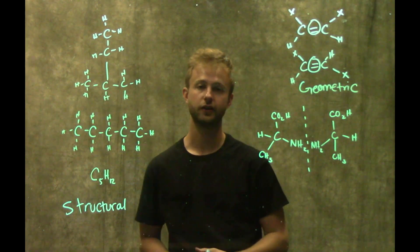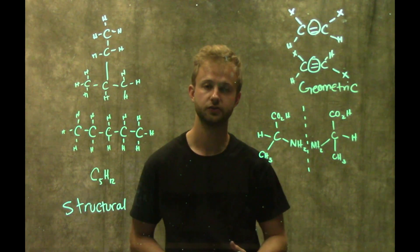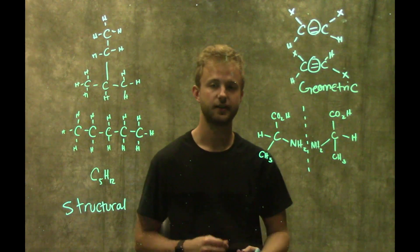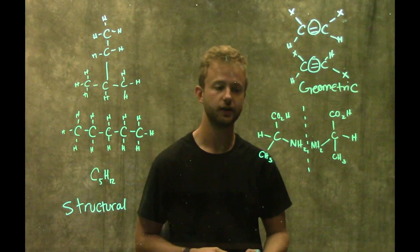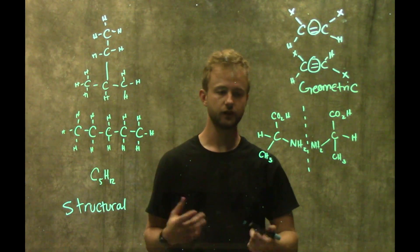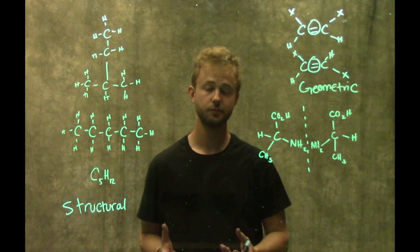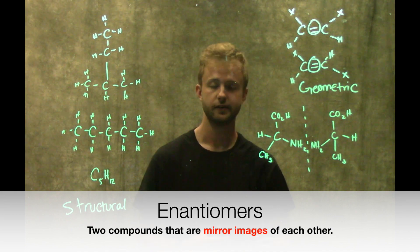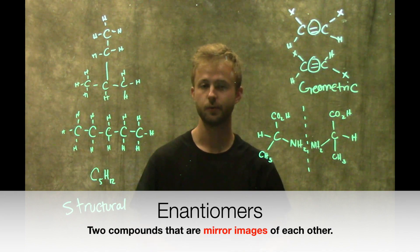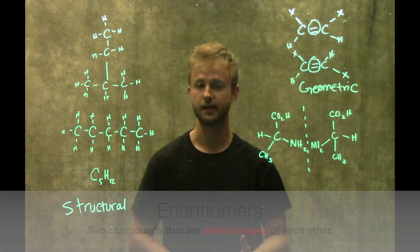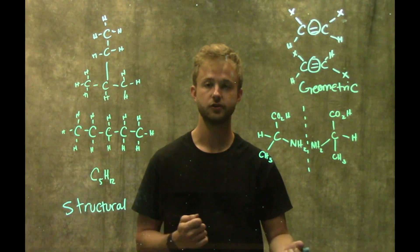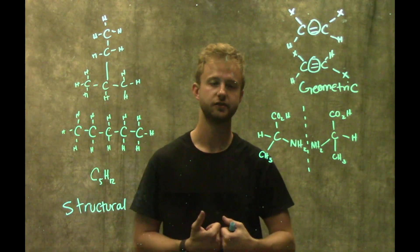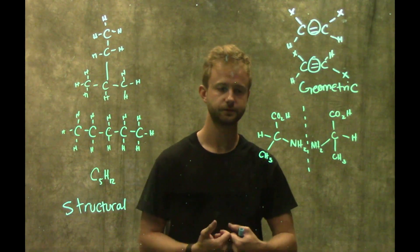Lastly, we're going to look at enantiomers. Enantiomers are kind of the trickiest isomer to work with. An enantiomer is two molecules that again have the same number of atoms of the same elements, but they're going to be non-superimposable mirror images of one another.